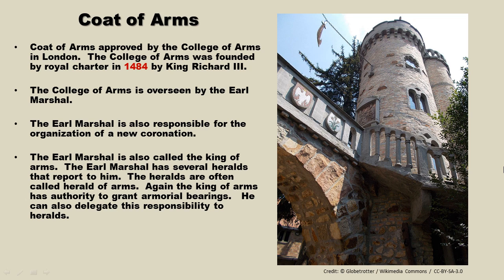The Earl Marshal is also responsible for the organization of a new coronation, telling everyone at that coronation where they sit based on how royal they are. The Earl Marshal is also called the King of Arms and has several heralds that report to him, often called Herald of Arms. He can also delegate his responsibility to heralds. The process for obtaining a coat of arms: you submit your request to England's Earl Marshal and the College of Arms, who can either agree or disagree with your new arms. Once they are in agreement, you're in.